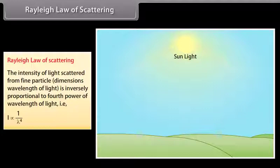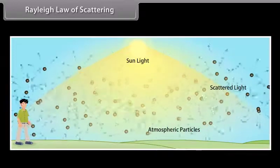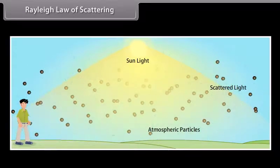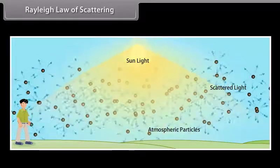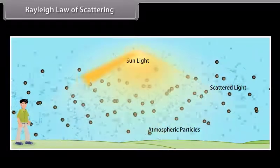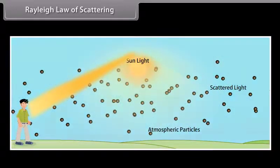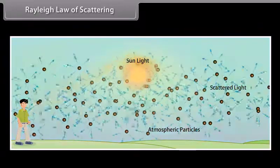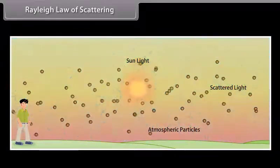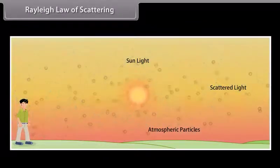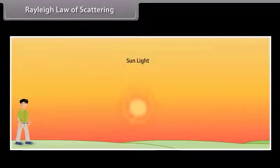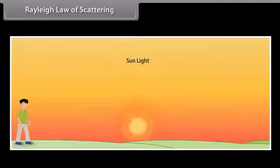This explains why we see a blue sky most of the time, and why the sun appears reddish at sunrise or sunset. As the sun gets lower in the sky, its light passes through more of the atmosphere, causing even more blue light to be scattered and allowing red light to pass straight through to your eyes.